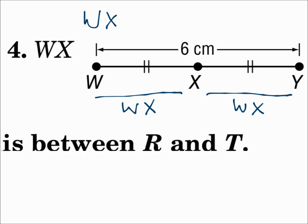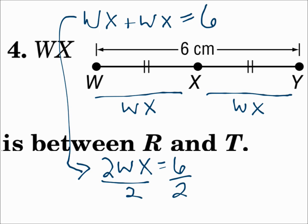So, the parts add up to equal the whole thing. Come down here. WX and WX is 2WX, and then divide both sides by 2. WX is equal to 3 centimeters.